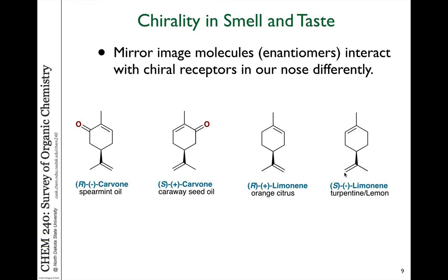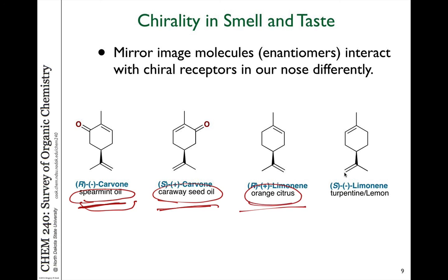We see the impacts of chirality in macroscopic ways. Mirror image isomers of molecules can interact differently with proteins and enzymes in our body, which are also chiral. For example, the molecule carvone has a structure and its mirror image. The mirror image isomer on the left tastes and smells like spearmint — it is the component of spearmint oil — whereas the one on the right tastes and smells like caraway seeds. Similarly, the molecule limonene: one mirror image has an orange flavor, whereas the other can smell or taste like turpentine or lemon.